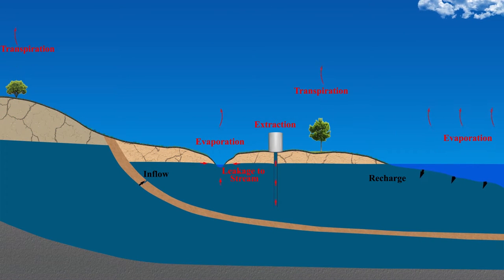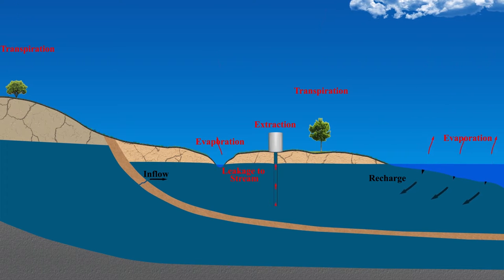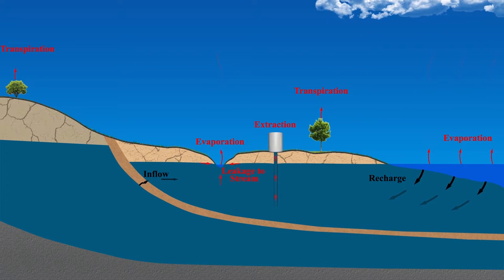Accounting for the groundwater budget requires thinking about the water cycle. The water cycle is the continuous movement of water on, above, and below the surface of the earth.